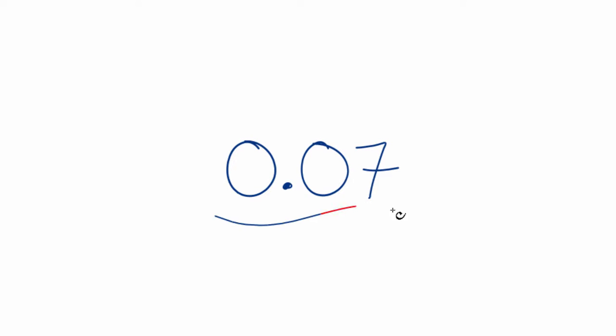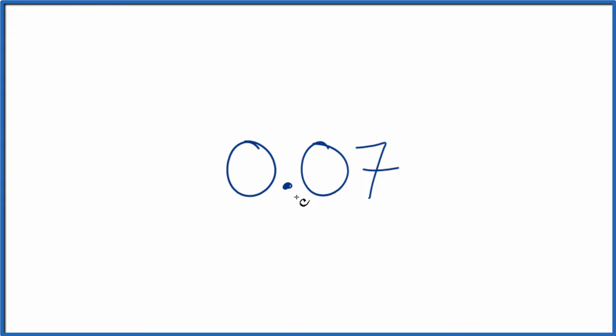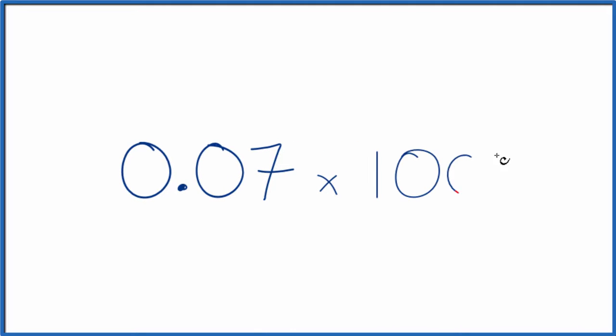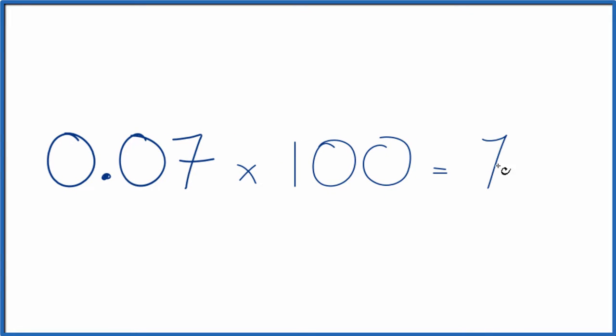Let's change the decimal 0.07 to a percent, and I'll show you two ways to do this. The first way, just multiply your decimal times 100, and that gives you a percent. So we end up with 0.07 times 100 is just 7. That's 7 percent.